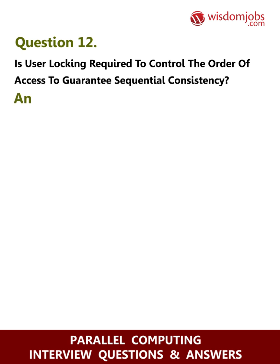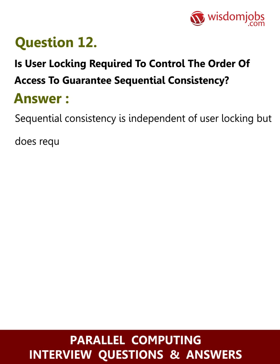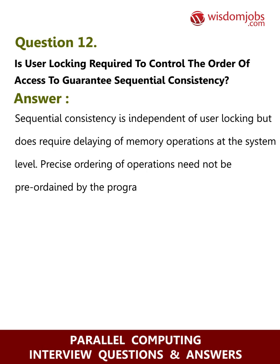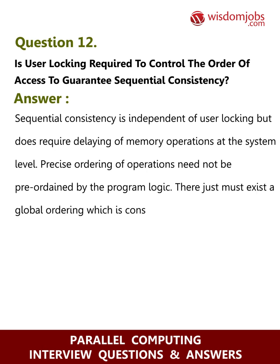Question 12: Is user locking required to control the order of access to guarantee sequential consistency? Answer: Sequential consistency is independent of user locking but does require delaying of memory operations at the system level. Precise ordering of operations need not be pre-ordained by the program logic.